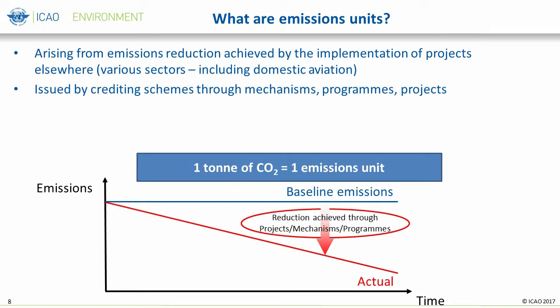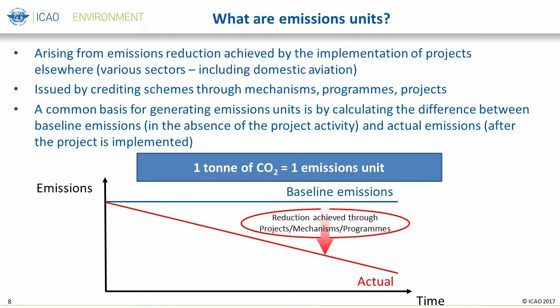These emissions units are issued by crediting schemes through mechanisms, programs, or projects. A common process for generating emissions units is by calculating the difference between baseline emissions in the absence of the project activity and actual emissions after the project is implemented. This is how a project generates emissions units to be bought and sold in the market and ultimately cancelled by aircraft operators to comply with their offsetting requirements under CORSIA.